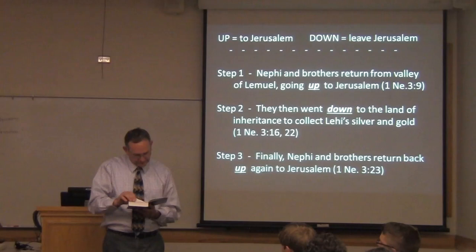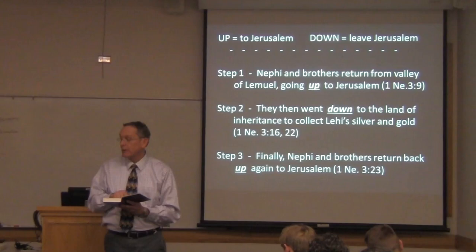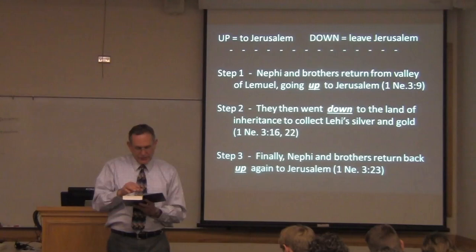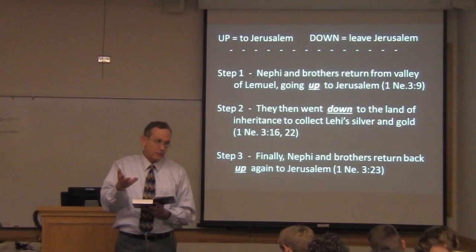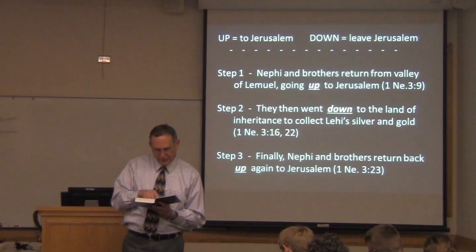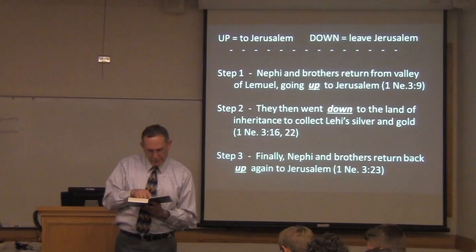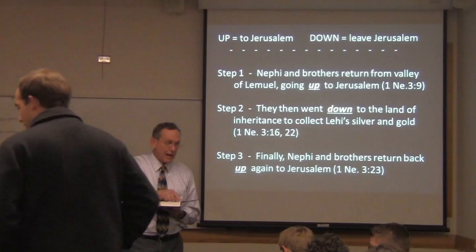Go to 1 Nephi 3 and read verses 16 and 17 with me. Nephi tells Laman and Lemuel and Sam: 'Let us be faithful in keeping the commandments of the Lord. Therefore, let us go down to the land of our father's inheritance. For behold, he left gold and silver and all manner of riches, and all this hath he done because of the commandments of the Lord.' So apparently Lehi's hiding his wealth due to revelation.